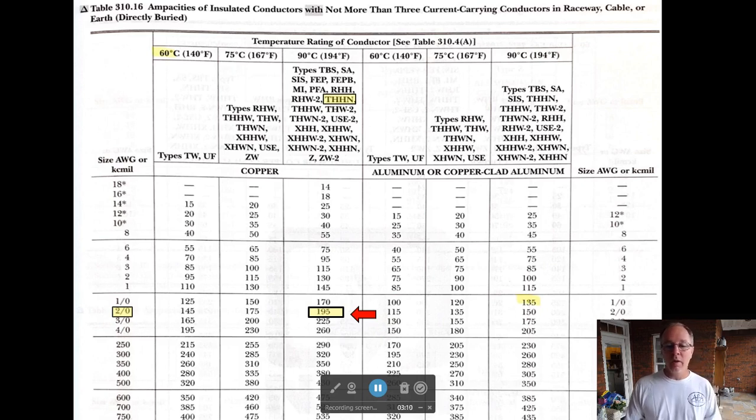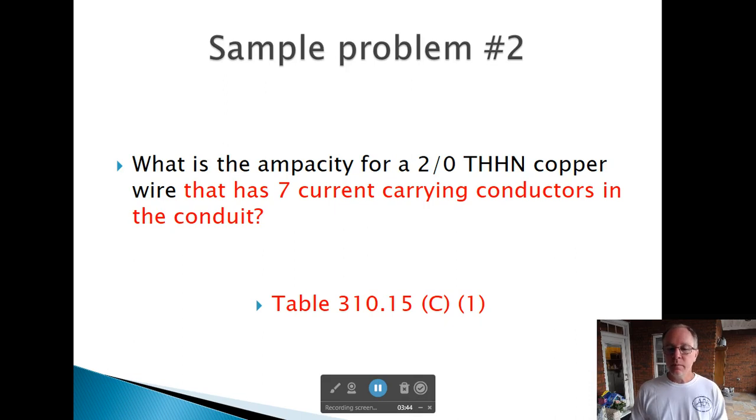If you're looking for 4-Aught THHN, you do the same thing, or number 6-TW. You see 6, you see TW, and follow the chart. This is the first thing you do on every question. You'll find what size wire, what size insulation, and the type of material—copper or aluminum. As soon as you find those three, you go to this table and you establish a number on your ampacity. Then we're going to go up or down from that number.